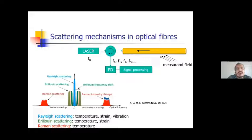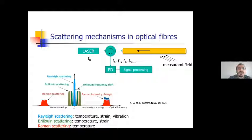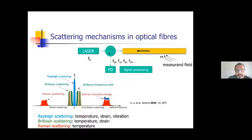Basically, all distributed optical fiber sensors are based on some form of scattering of light within the fiber. When we inject a pulse of light from a laser having a frequency f0 into the fiber, we see that there is some backscattered light that contains different components. One of these components has the same frequency as the laser — this is the so-called Rayleigh scattering — but there are also other components F1, F2, etc., that are related to other kinds of scattering. In particular, we have the Brillouin scattering and the Raman scattering.